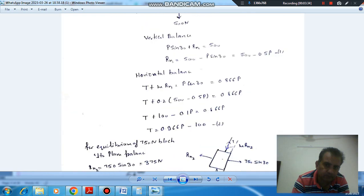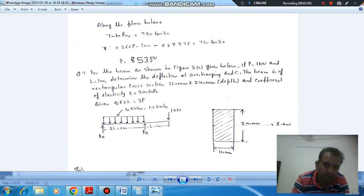So it will be equal to T minus mu R_N2 will be equal to 750 cos 30.